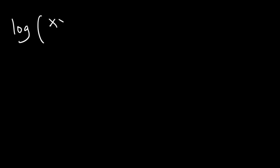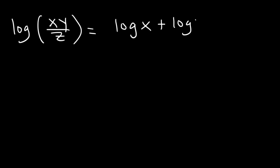So consider this problem: log of x times y divided by z. Go ahead and expand the expression. x and y are both on top, so it's going to be positive log x plus log y. z is on the bottom, so it's going to be minus log z.